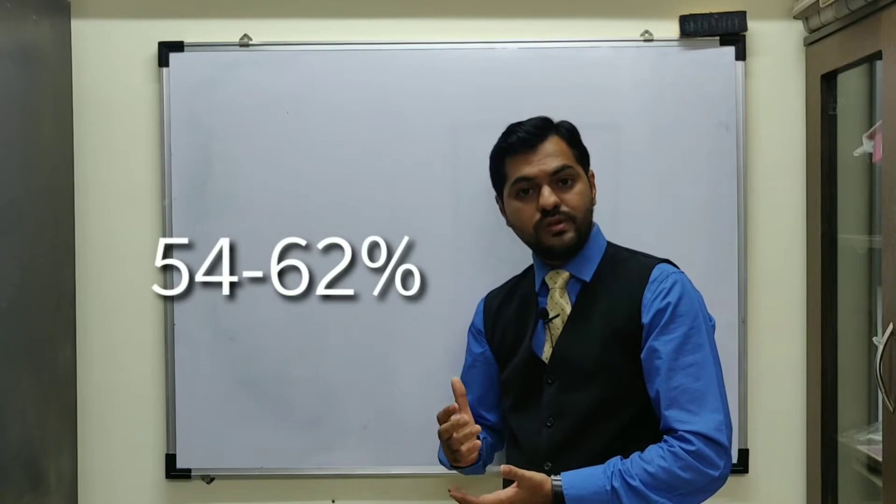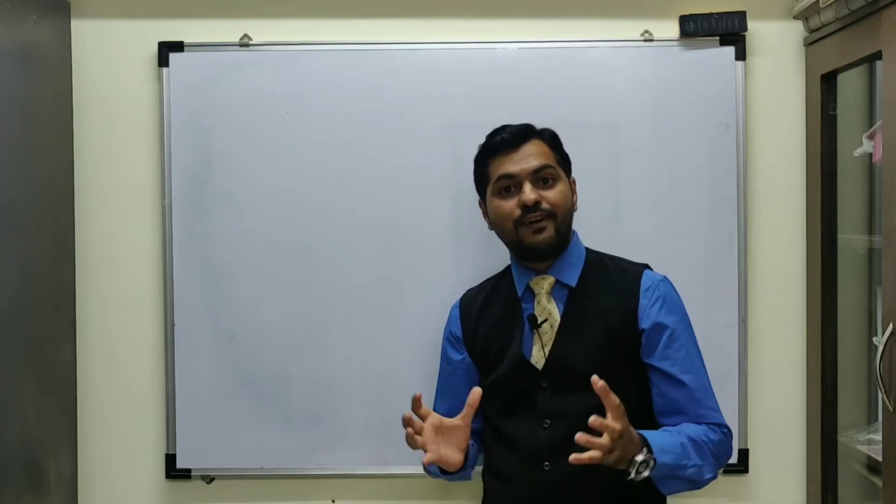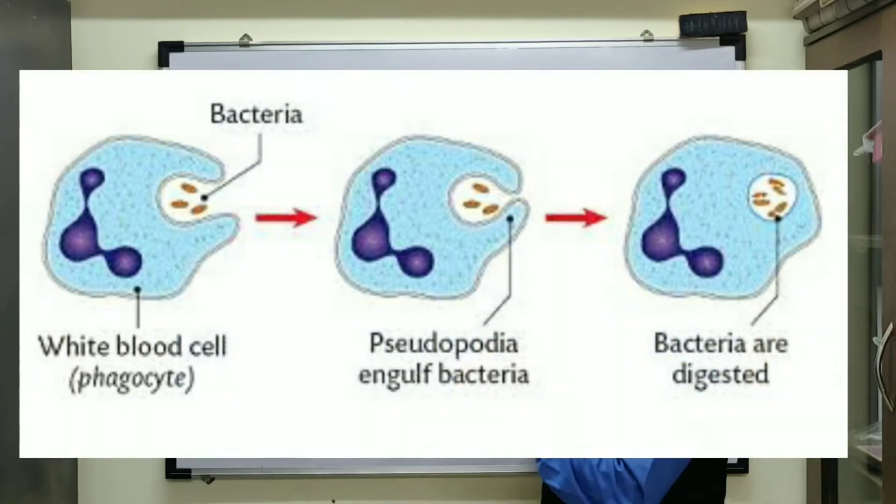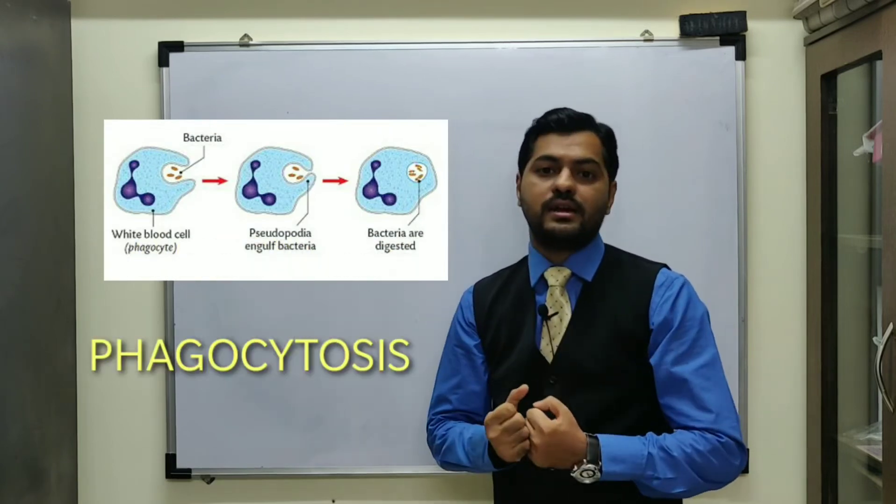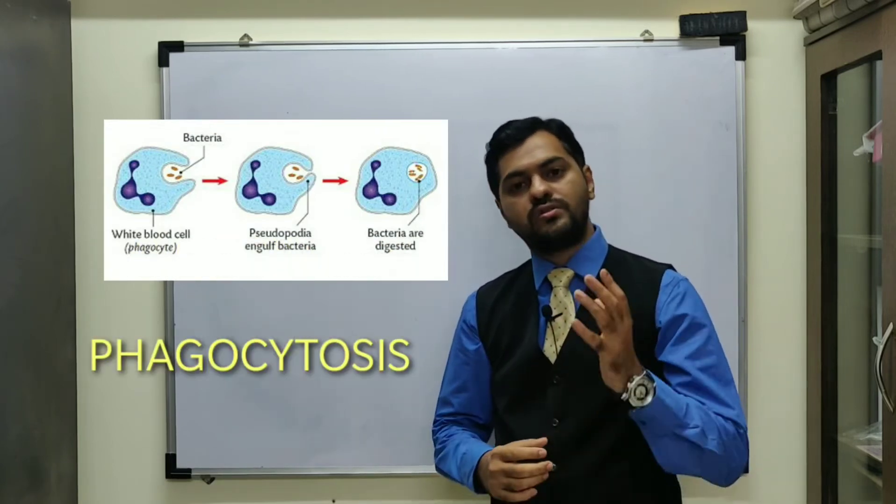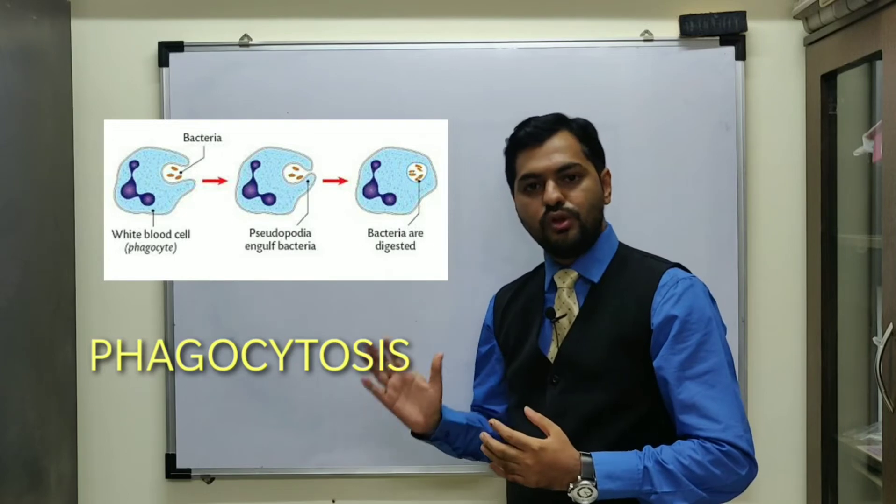The neutrophils have a major role: they perform phagocytosis. Phagocytosis means engulfing the microbes. So it surrounds the bacteria and completely digests it. Phagocytosis is one of the major functions of neutrophils.